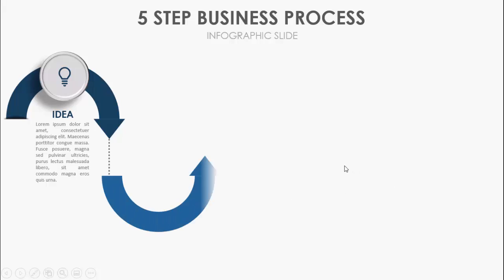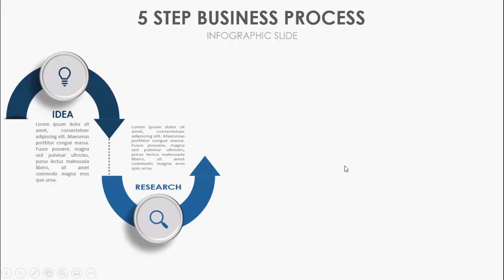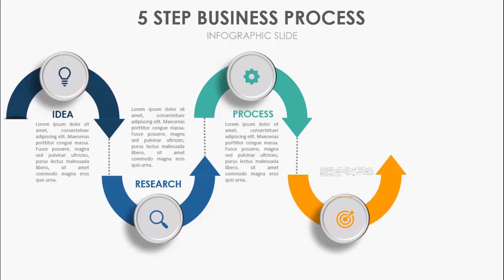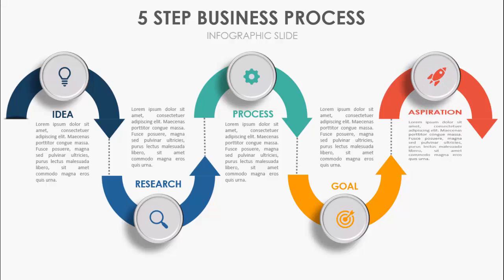On the next click the second arrow will come, and the second option is research, then the third option is process, the fourth option is the goal, and the last fifth option is the aspiration. I've created two slides — one with animation and another without animation — so depending on your requirement you can just choose the slide and change the text as per your requirement.